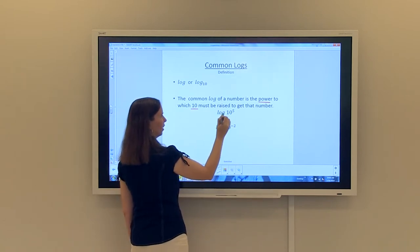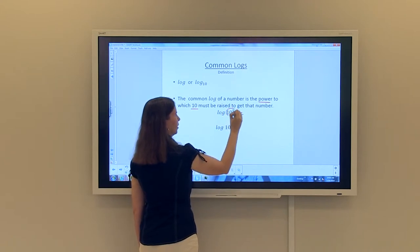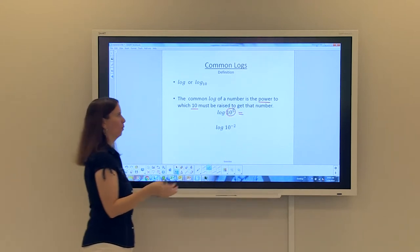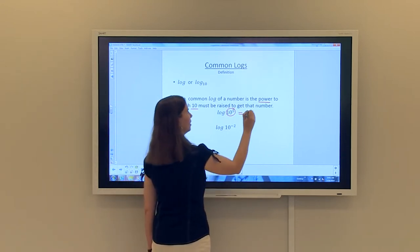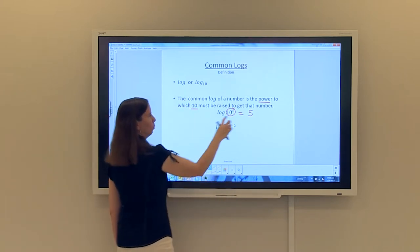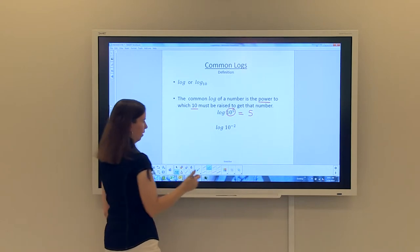So for example, we're going to start out simple here. If I have log of 10 to the fifth, I'm going to focus on this number. And you're going to ask yourself, 10 to what power will give you 10 to the fifth? Well, obviously, the power is 5. So your answer is 5. So 10 to the fifth power will give you back this answer. So the log of 10 to the fifth is 5. Pretty simple.